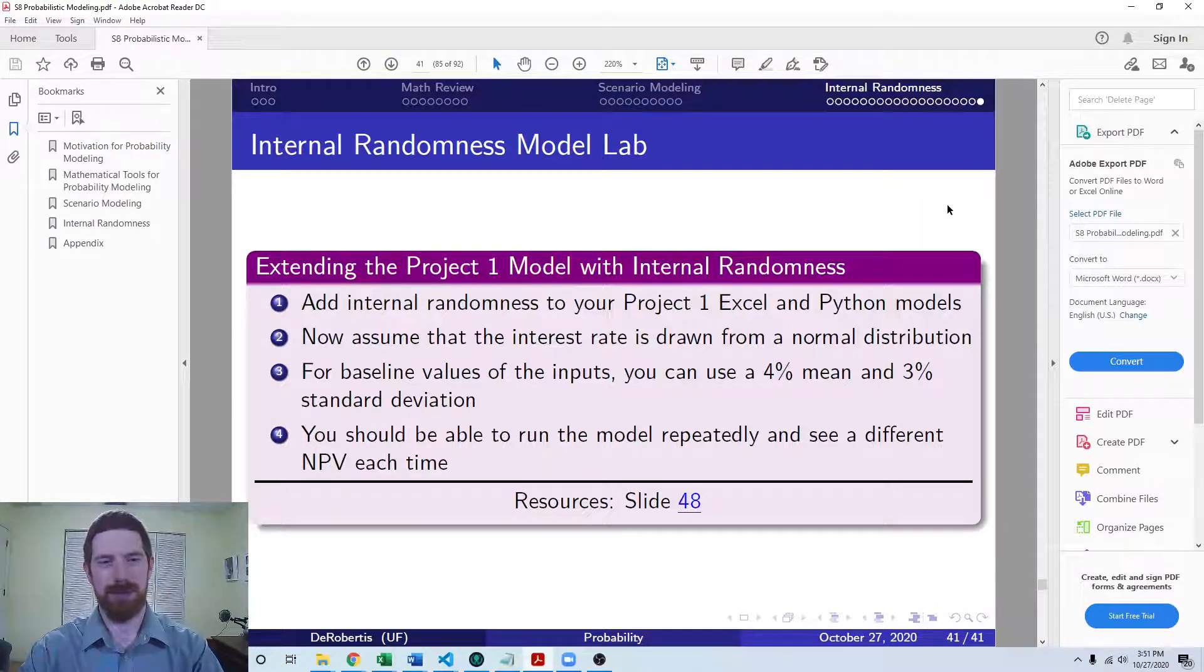Here we're going to make the interest rate in the model a continuous random variable. I selected the interest rate because it's not going to require much of a change to your existing models.